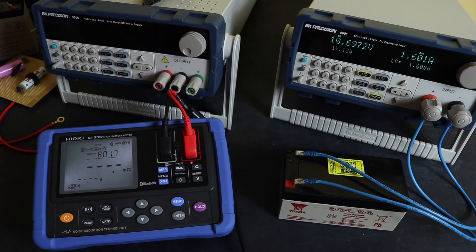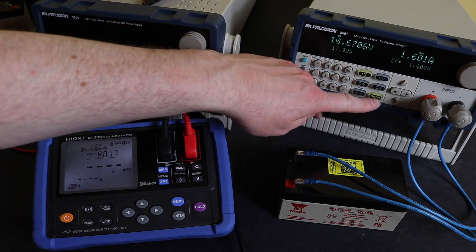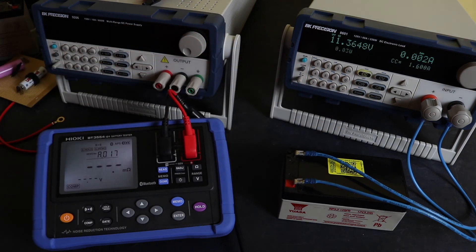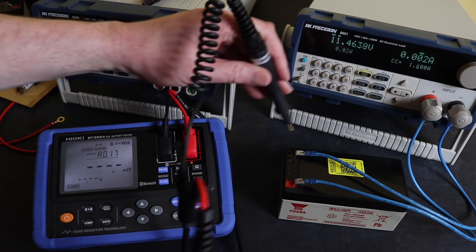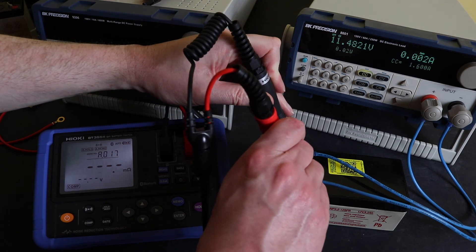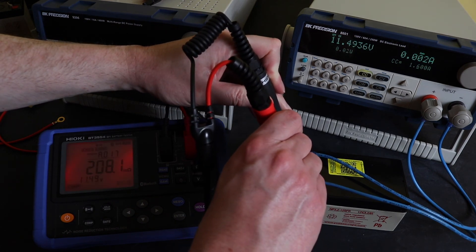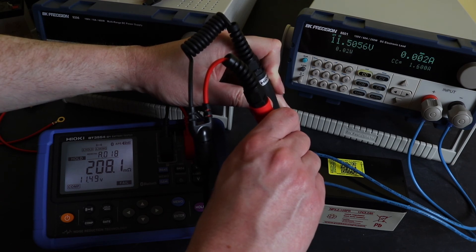So we're on 10.7 volts now. If you just watch what I'm going to do is turn the load off, and you should see the voltage jump up quite high. See, immediately it's up to 11.4. If I take a reading now, the internal resistance will still be high, but the voltage should come back up. 7.49, 208, no real difference.